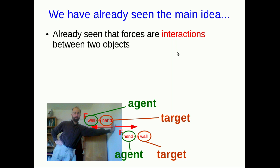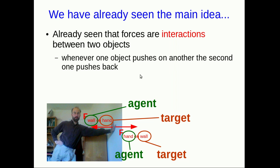We've actually already seen the main idea of this whole lecture. We saw way back in the last unit that when my hand pushes on the wall, the wall pushes back on my hand. All forces result from interactions between two objects, and each of the objects exerts a force on the other. So whenever one object pushes or pulls on another, the second object pushes or pulls back.